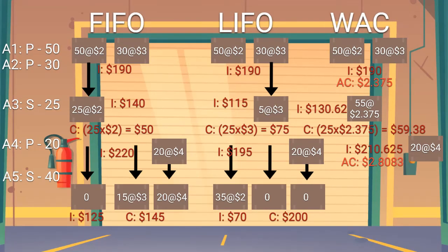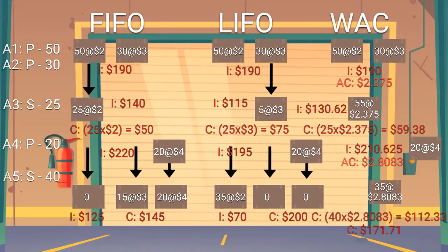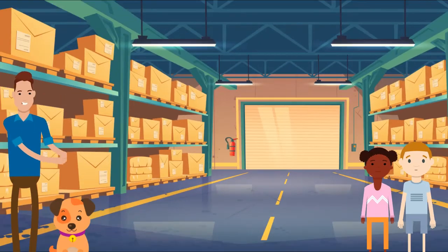Let's wrap up the WAC method. We sold 40 lemons at approximately $2.8083, so that comes out to a cost of approximately $112.33 for these 40 lemons, and a total cost of goods sold of $171.71. The remaining 35 units have an inventory balance of approximately $98.29. I think we understand how each method works now.